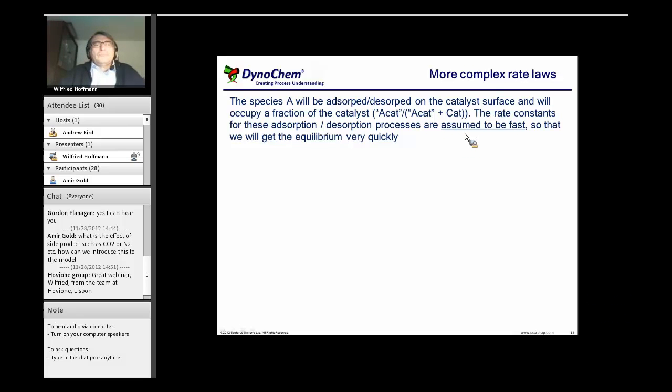In DynoChem we write down A + Cat gives A-Cat, a species where the A is bonded to the catalyst, with an equilibrium constant Ka. We can do the same for the hydrogen with another constant here.